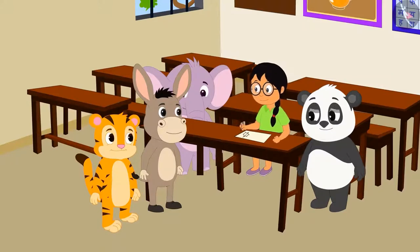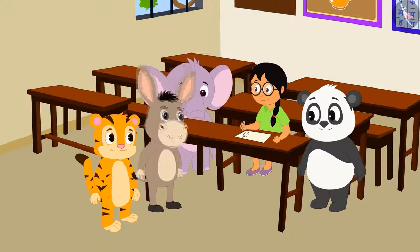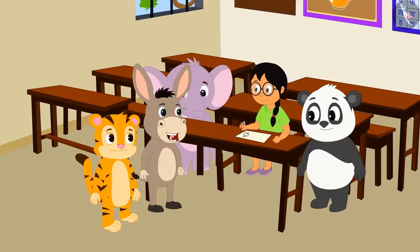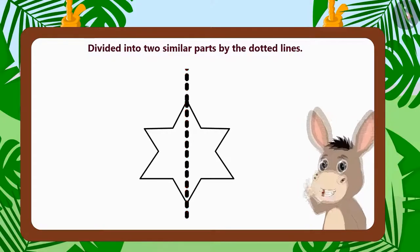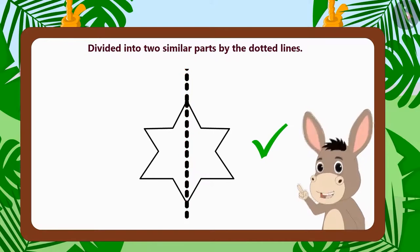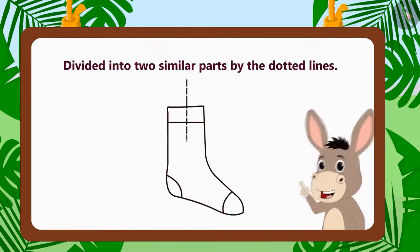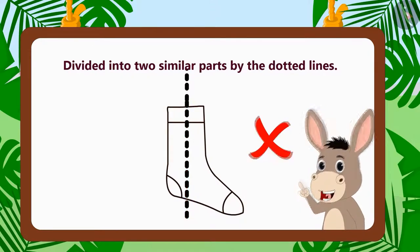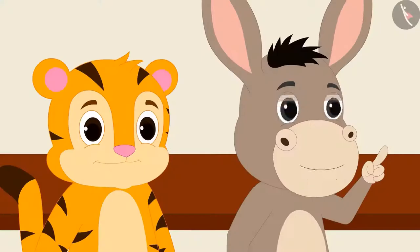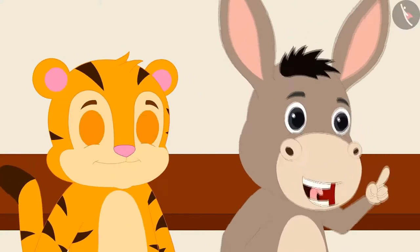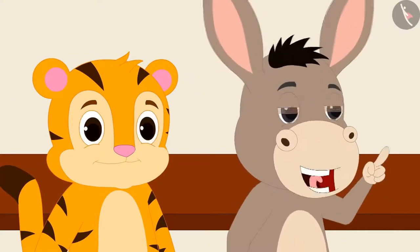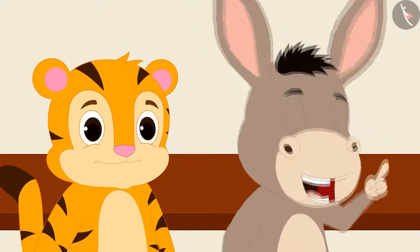Then Bholla explains: 'There is no magic. There are some alphabets and objects that are made of two similar parts, therefore they can be divided into two similar parts by using a dotted line. However, there are some objects and letters that are not made of two similar parts, therefore they cannot be divided into two similar parts by using a dotted line.'